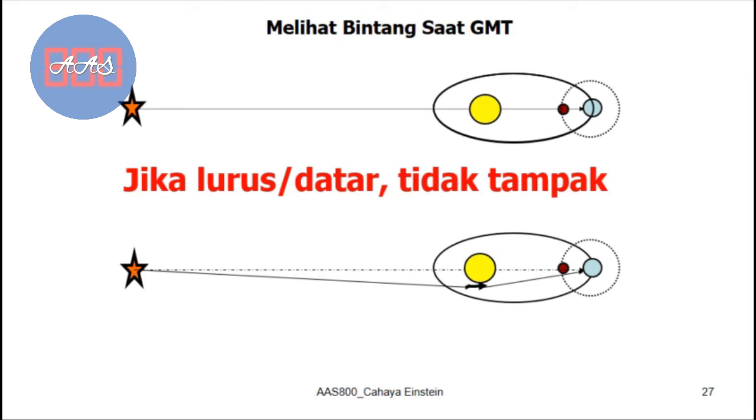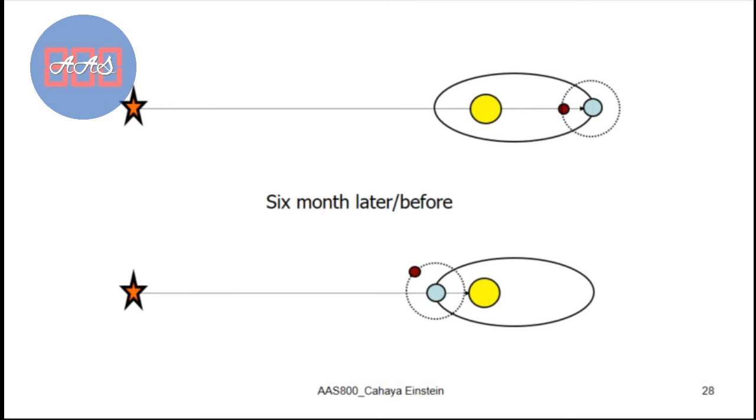And to test whether the star's position is really there, we wait 6 months later, so that when it's night, we know, oh, it's true that the star is in the position as predicted 6 months earlier, during the total solar eclipse.